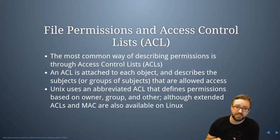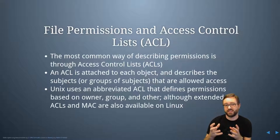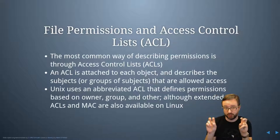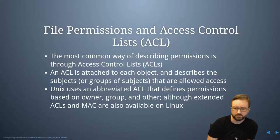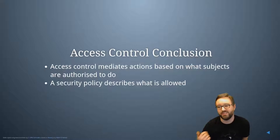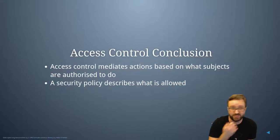On Unix and Linux, the default security approach uses an abbreviated access control list that encapsulates things in terms of what the owner is allowed to do, what the group members are allowed to do, and what everyone else is allowed to do. Linux also supports full ACLs in the same way Windows does. In conclusion, access controls are really important — they mediate actions based on what subjects are authorized to do, and there's a security policy that describes what's allowed. We're going to dig into more detail on specific points in separate videos.